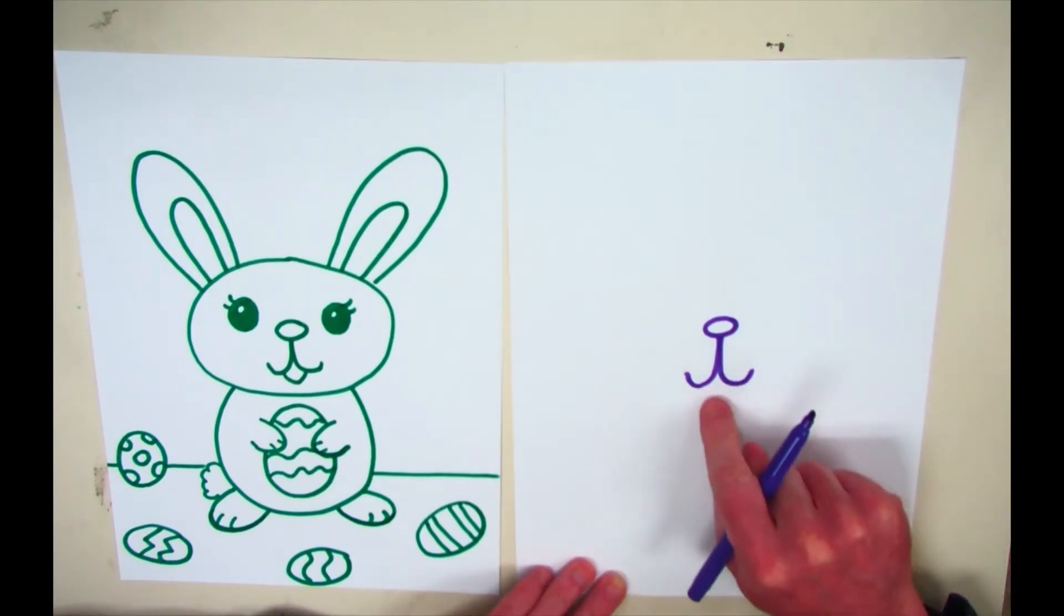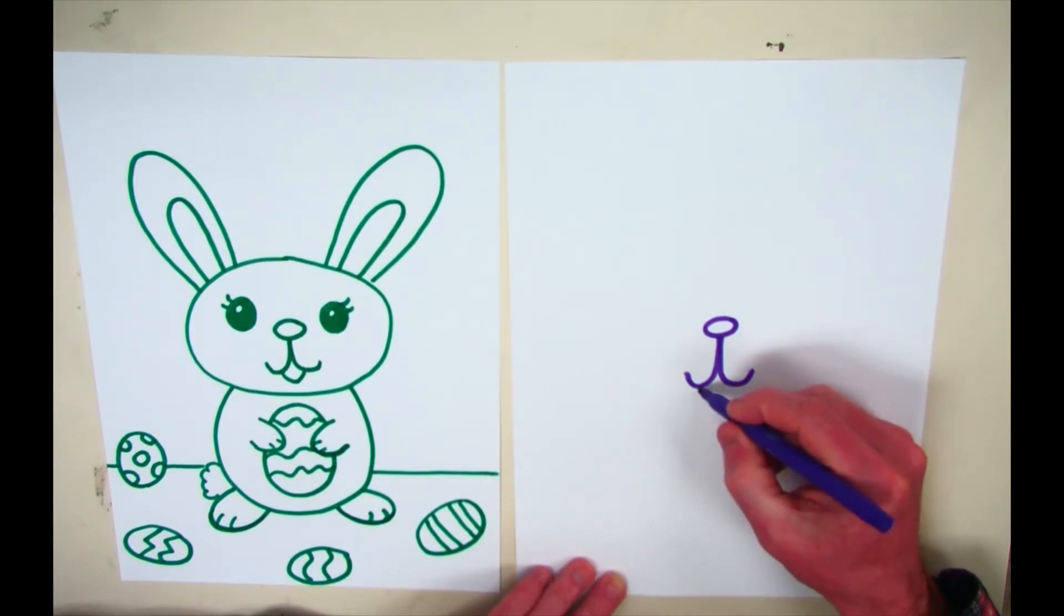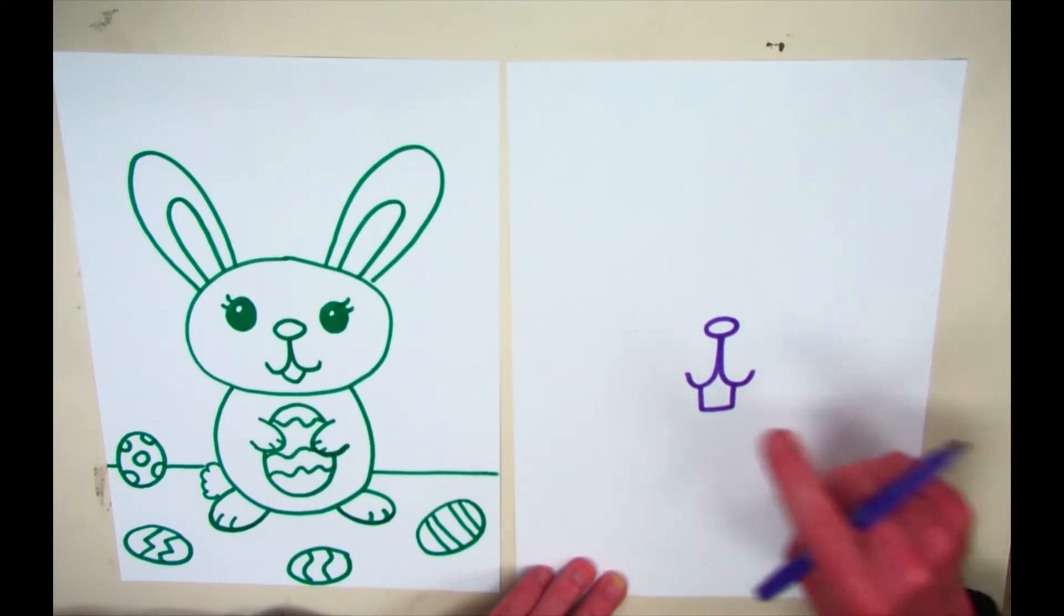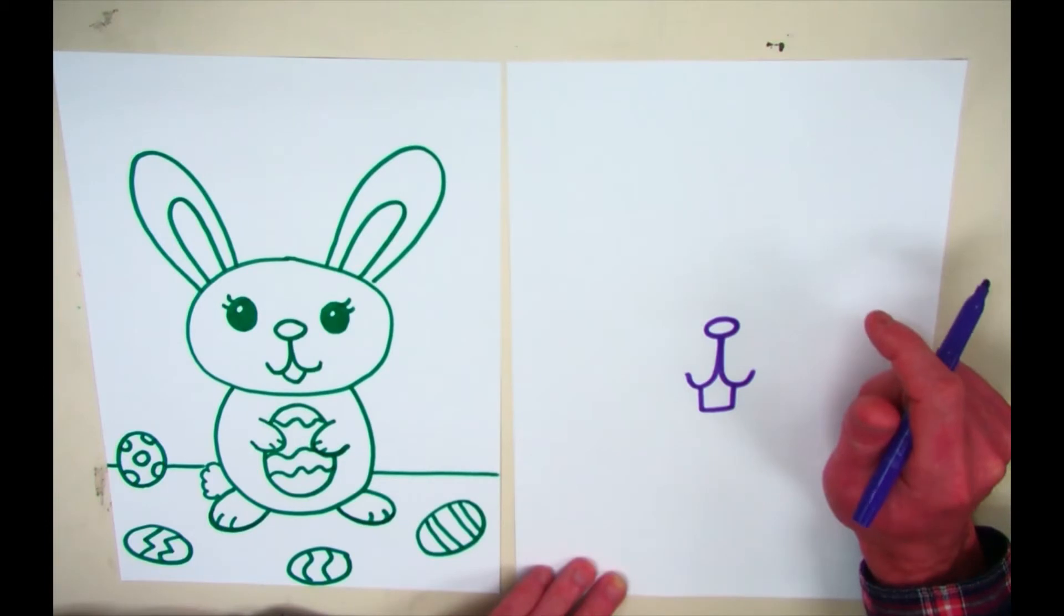After that, you can decide if you want to put on a tongue or little teeth. For teeth, you draw sort of like a square type line. And for a tongue, you draw more like a U-shape line.